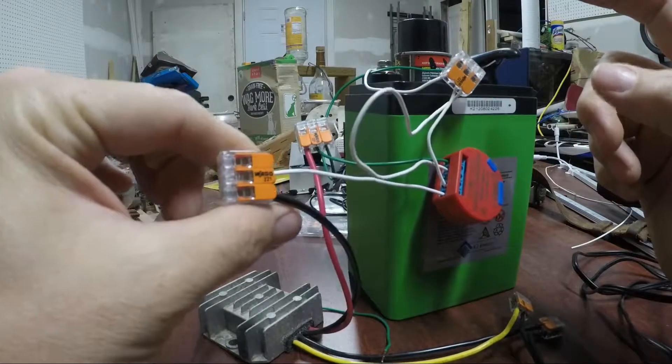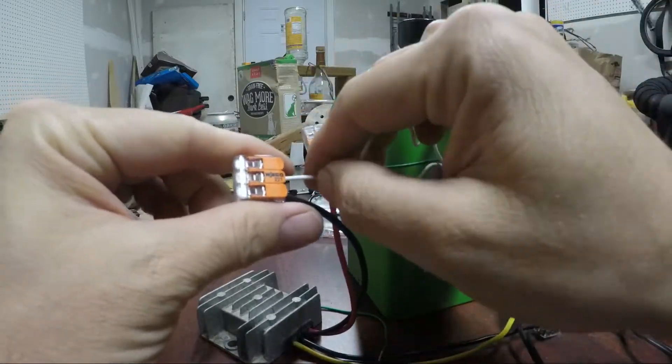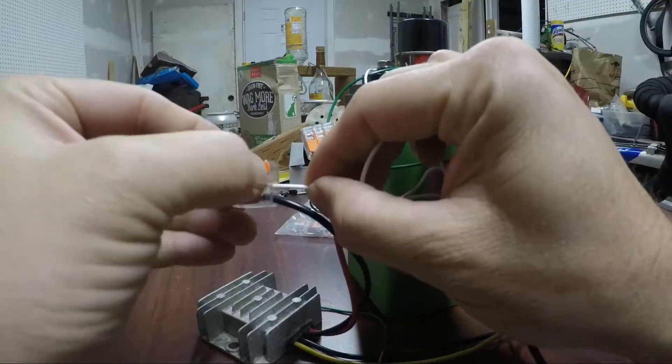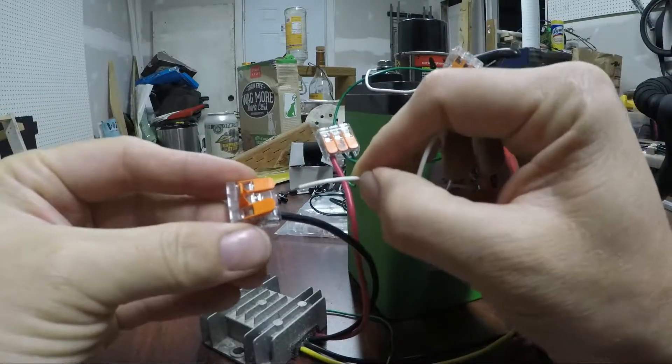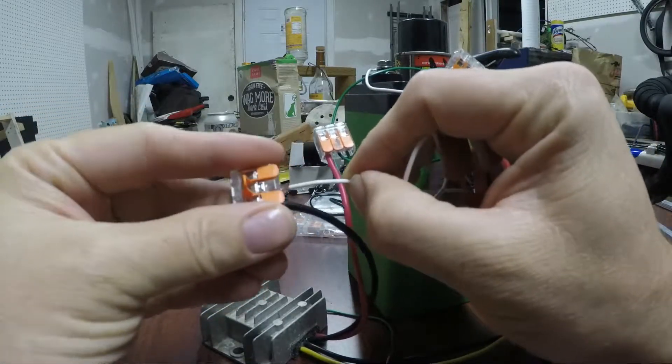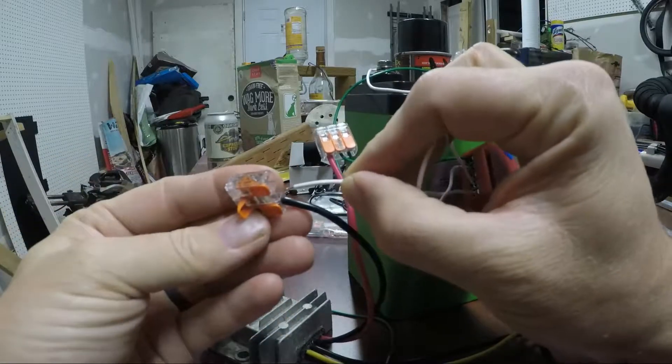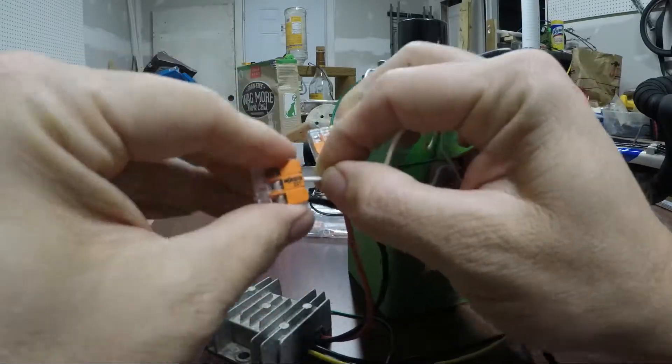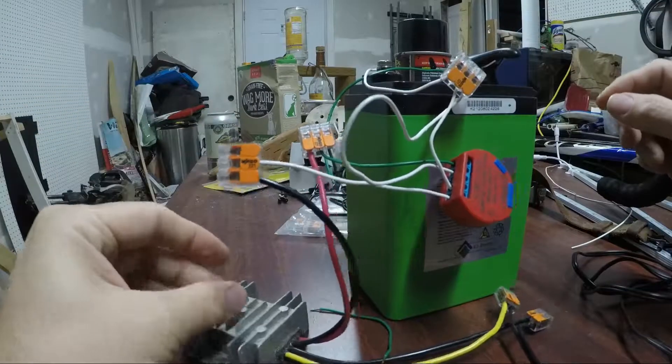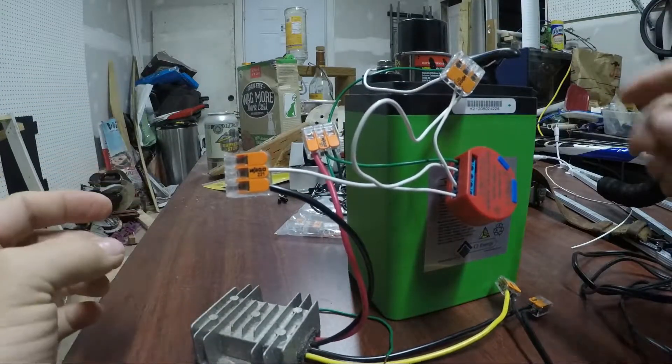Anyways, Wago wire nuts, if you haven't played with these, these are freaking fantastic. Literally just boom, pop that open. There's your wire. They're secure. We'll push this back in here. Get back in there. And then clip. And those are secure. So better than wire nuts. A whole lot of hassle saved.